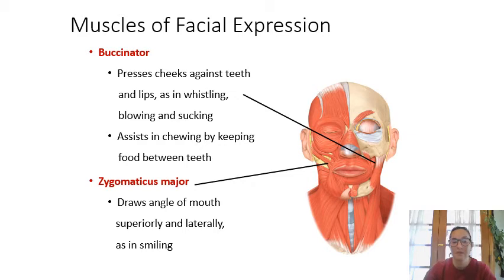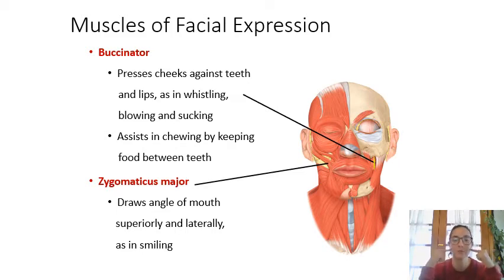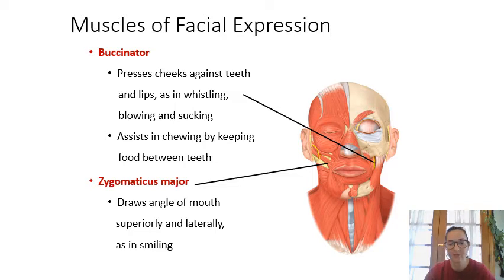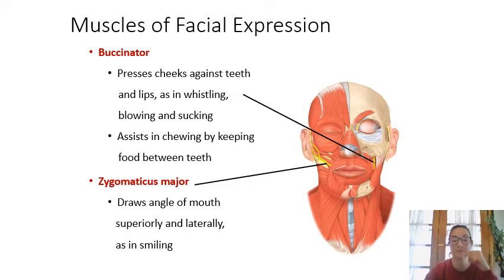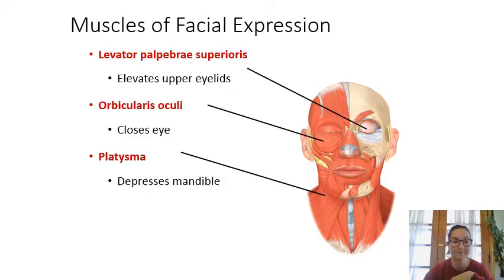The buccinator is a deep muscle of the cheeks — it allows you to pull your cheeks inward, like making a fish face. Zygomaticus major originates on the zygomatic bone and inserts on the lips; when it contracts, it makes you smile. So zygomaticus major is the smiling muscle.